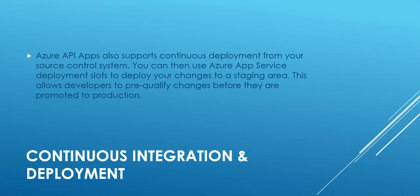Continuous integration and deployment: Azure API apps also supports continuous deployment from your source control system. You can then use Azure App Service deployment slots to deploy the changes to a staging area. This allows developers to pre-qualify changes before they are promoted to production.